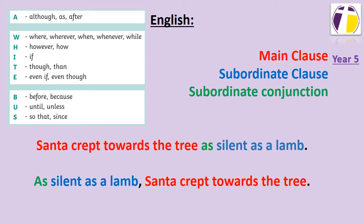To link my two clauses together, I have used a subordinating conjunction — I've chosen to use 'as.' You can also see in my second sentence that I can restructure it. This time I've used 'as' as my sentence starter, which means that my subordinate clause needs to be at the start: 'as silent as a lamb.' Because I don't have a subordinating conjunction in the middle this time, I need something else to take its place to separate my clauses.